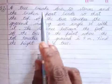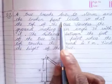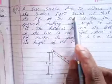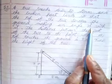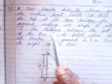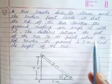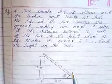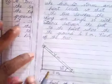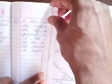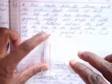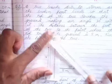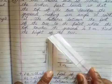Next problem: A tree breaks due to a storm and the broken part bends so that the top of the tree touches the ground, making an angle of 30 degrees with it. The distance between the foot of the tree and the point where the top touches the ground is 8 meters. Find the height of the tree.